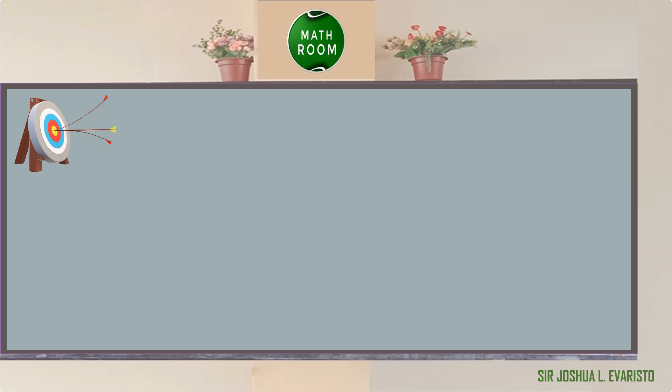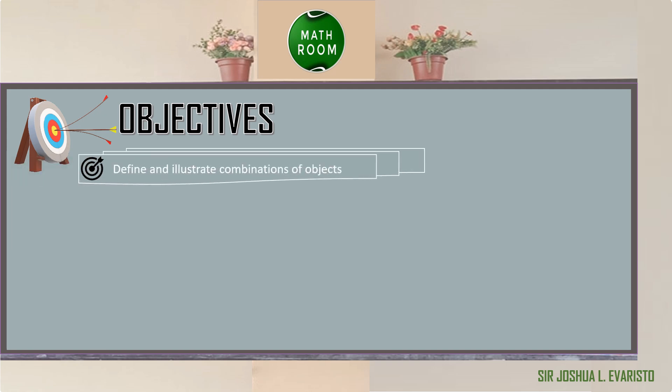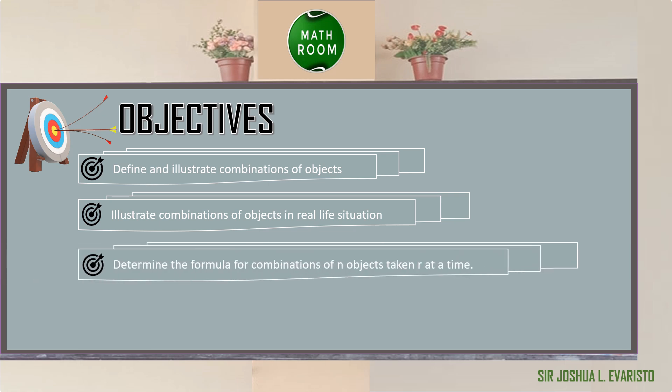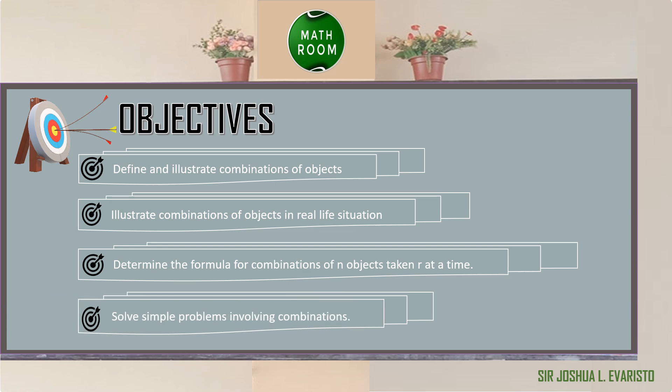Before we proceed, let me present our objectives. At the end of this lesson, you should be able to: define and illustrate combinations of objects; illustrate combinations of objects in real-life situations; determine the formula for combinations of N objects taken R at a time; and solve simple problems involving combinations.